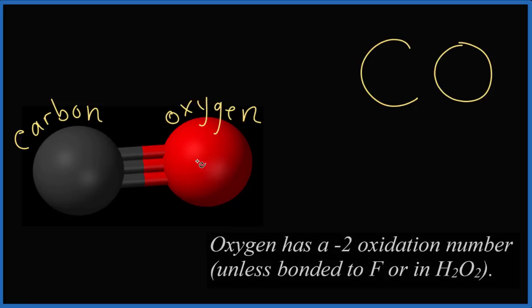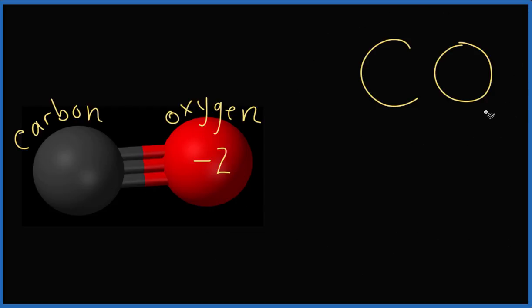We know that oxygen is usually minus two. So we'll put our minus two here for our oxygen, and that's going to help us figure out the carbon because the total charge numbers when we add the oxidation numbers up needs to be zero.